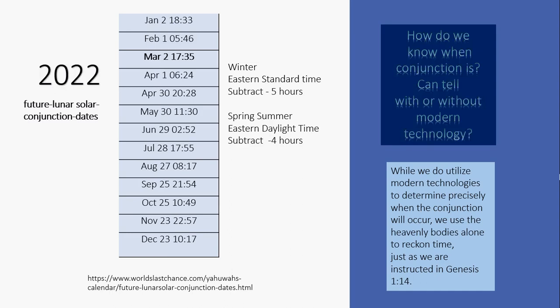How do we know when conjunction is? Can we tell with or without modern technology? While we do utilize modern technologies to determine precisely when the conjunction will occur, we use the heavenly bodies alone to reckon time, just as instructed in Genesis 1:14. There is a chart of all the future lunar-solar conjunction dates for 2022. To use the chart — the link will be left below — in Eastern Standard Time in winter you subtract five hours, and in spring you subtract four hours. The chart showed March 2nd at 12:35 because five hours were subtracted.